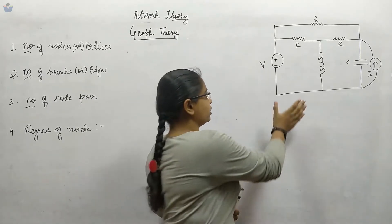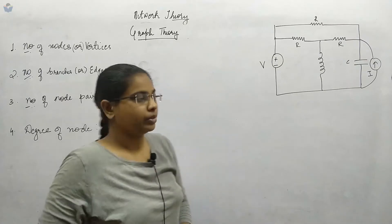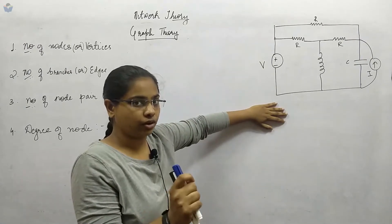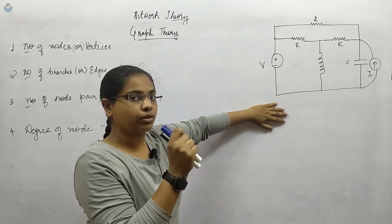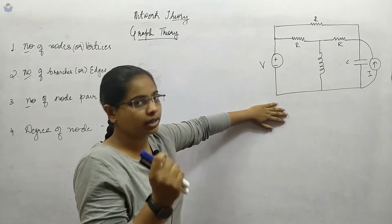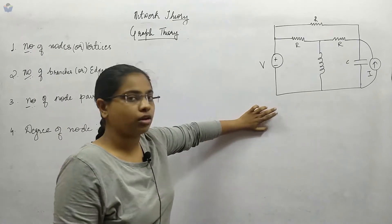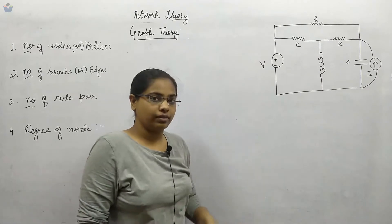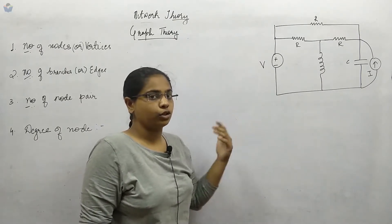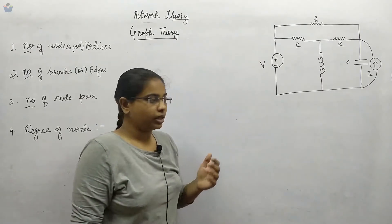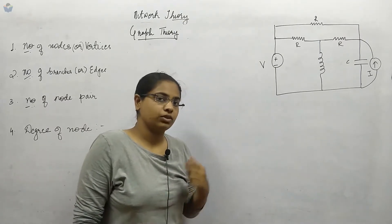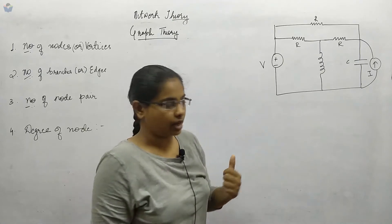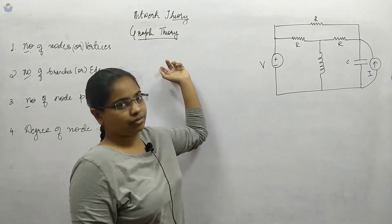So here you can see a circuit. Graph theory is basically used to make calculations very easy. By hand we can solve up to 3 variables, but when the variables exceed 3, it will be very difficult to solve the equations. That is why we use matrices which we can simulate in a computer using MATLAB software. So that is why we first learn graph theory.